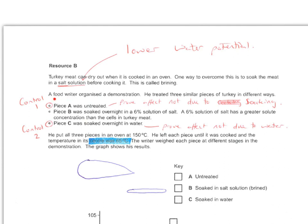Another thing we can see, the three investigations. B is the one that we're wanting to see if that has an effect, but we need to compare it to two things. We've got to have two controls. We've got to have one that's untreated, so this will prove the effect is not due to the soaking, to the brining process.